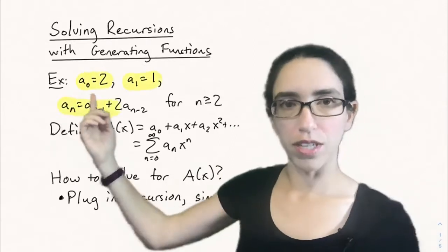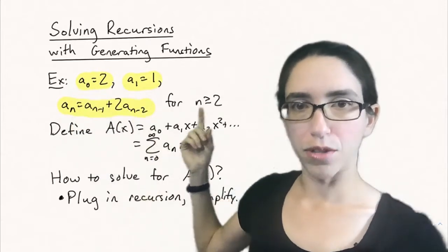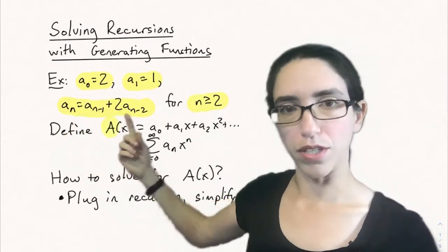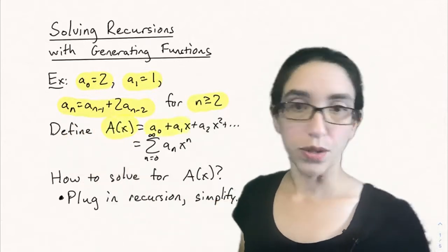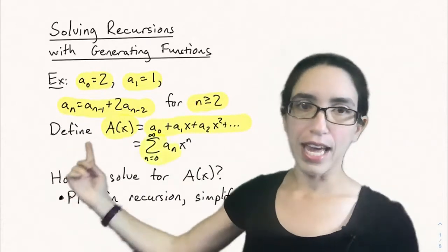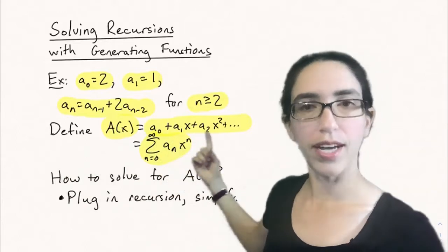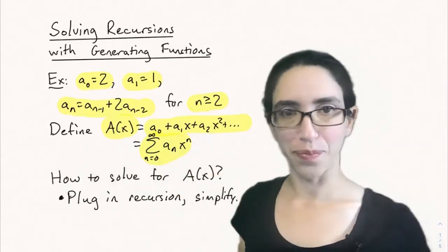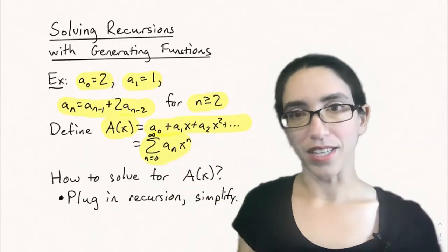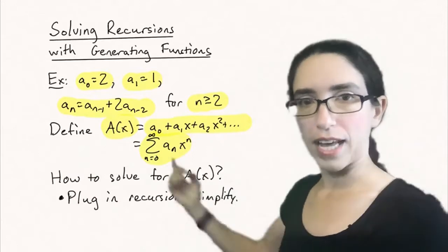Let's take the recursively defined sequence: a0 equals 2, a1 equals 1, and for all n greater than or equal to 2, a_n equals a_{n-1} plus 2a_{n-2}. This is a homogeneous linear recurrence of depth 2. We define a(x) to be its generating function: a0 plus a1·x plus a2·x² and so on — that is, the sum as n goes from 0 to infinity of a_n times x to the n. Let's try to solve for a(x).